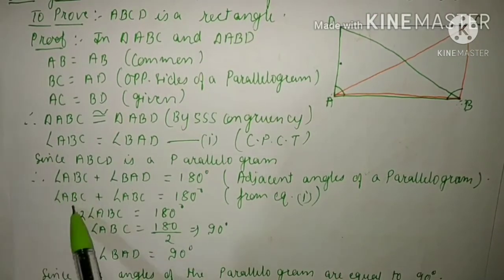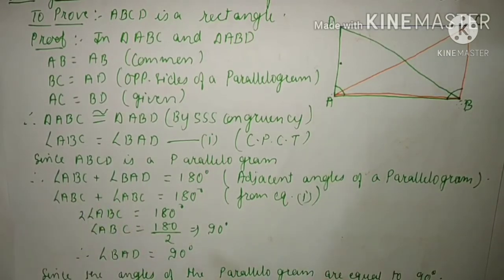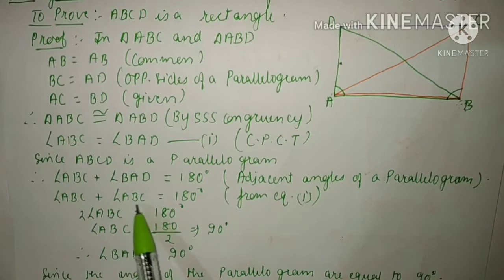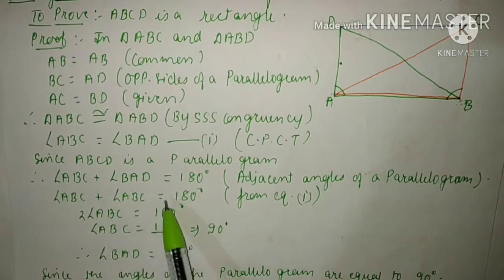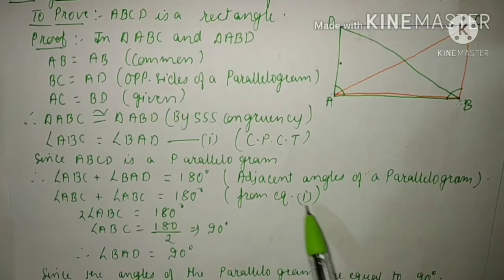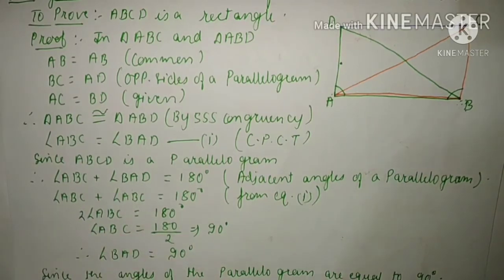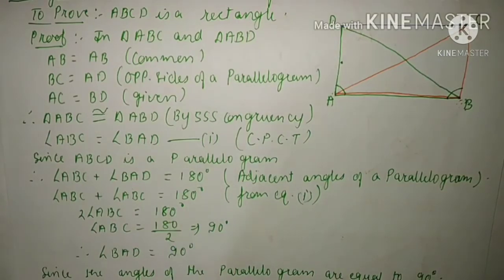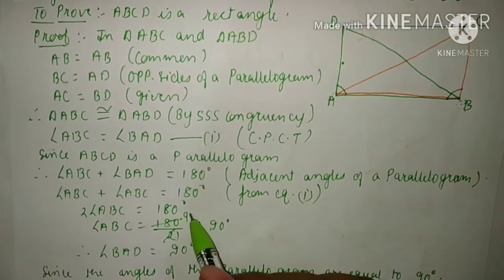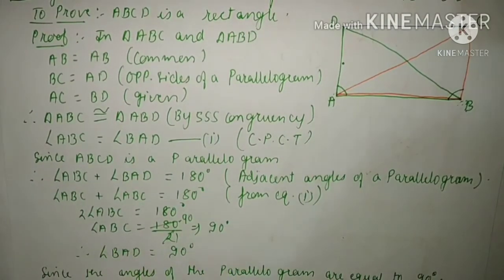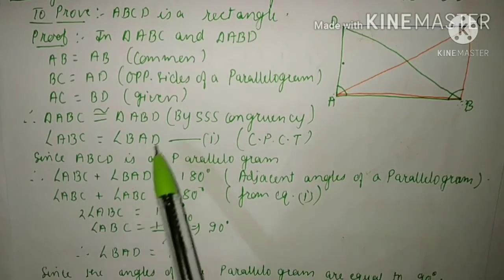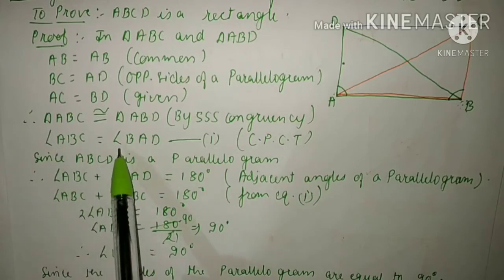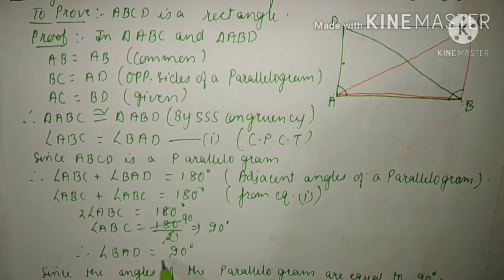Now we write angle ABC plus angle ABC equals 180 degrees — because from equation 1, angle ABC equals angle BAD, so we substitute angle ABC in place of angle BAD. So 2 times angle ABC equals 180 degrees, giving angle ABC equals 90 degrees. From equation 1, angle BAD also equals 90 degrees.